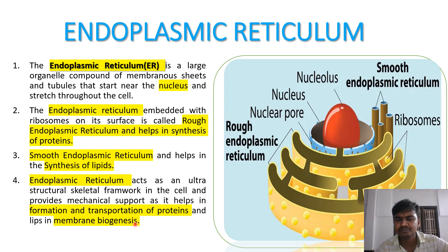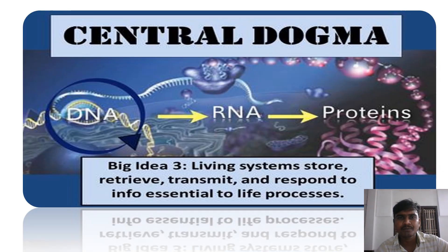We already know that the plasma membrane is made up of proteins and lipids. This relates to the central dogma: DNA replicates to form RNA, and RNA is finally translated into proteins.